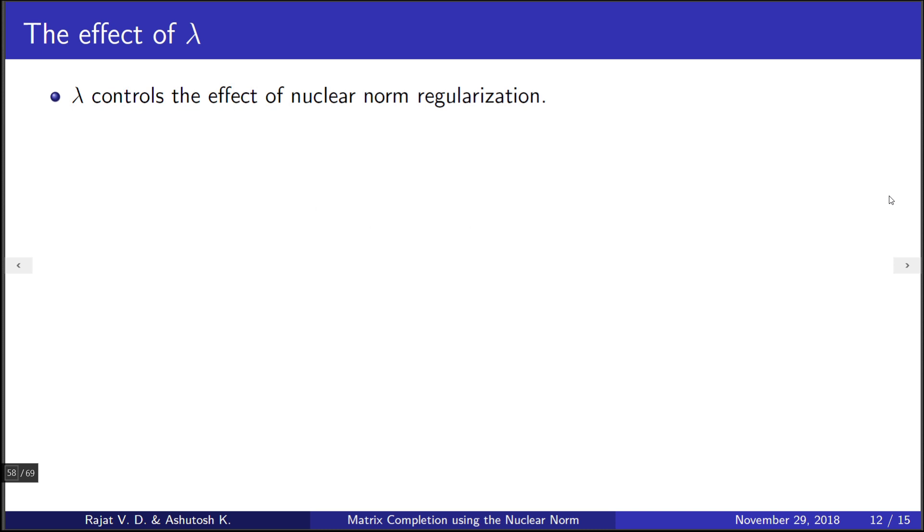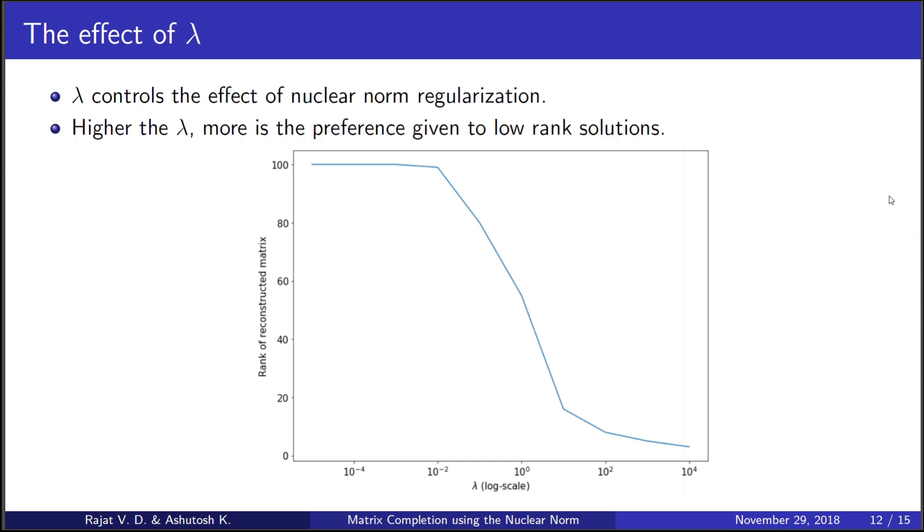To analyze the effect of lambda on the solution, we implemented and ran the algorithm on a bunch of random 100 cross 100 matrices from which we had sampled only 5% of the entries. This is the graph we got between the rank of the reconstruction and the value of lambda used. Clearly, a higher value of lambda leads to lower-rank solutions because more weightage is given to the nuclear norm.